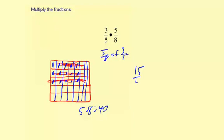So we have 15 fortieths. And that actually reduces by 5 to 3 eighths. So 3 fifths times 5 eighths is 3 eighths.